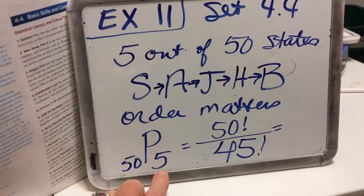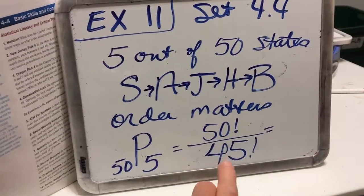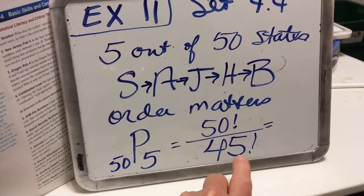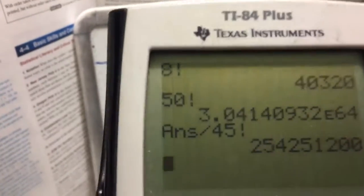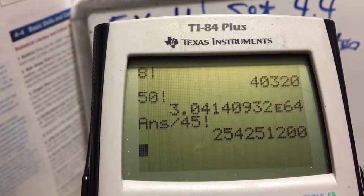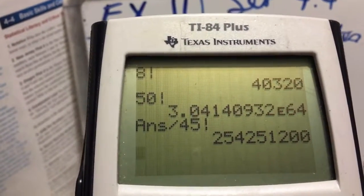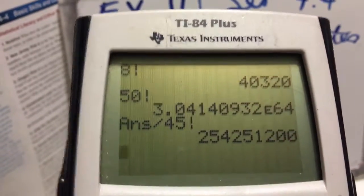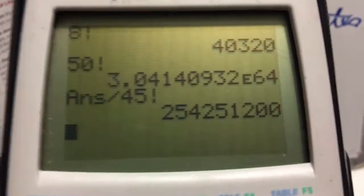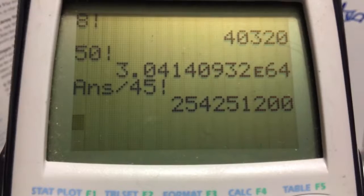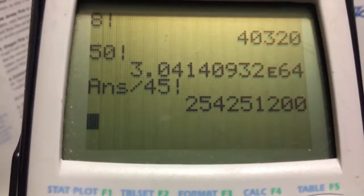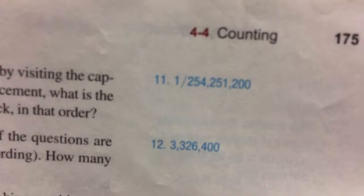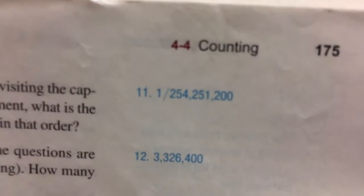We want this order of the cities that we're going to go. The order matters, so we'll use a permutation. 50 states, choosing five destinations is going to be 50 factorial over 50 minus 5, which is 45 factorial. And when you calculate that on the calculator, I have 50 factorial divided by 45 factorial, 2, 5, 4, 2, 5, 1, 200, and that is correct because I have the answer key. So the probability that you would get the cities in the order that they wanted them would be 1 over that big number.